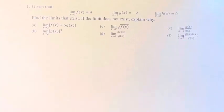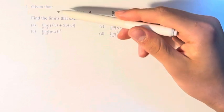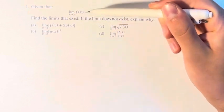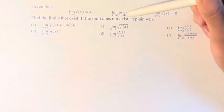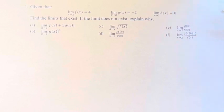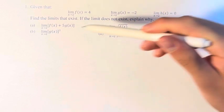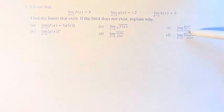Hello, and welcome back to another video. In this problem, we're told that given that the limit as x approaches 2 of f of x is equal to 4, g of x is equal to negative 2, and h of x is equal to 0, what are the values of these limits as x approaches 2?